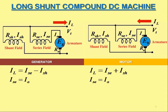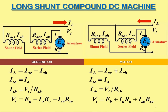The series field current ISC would be identical to the armature current IA for both long shunt compound DC generator as well as long shunt compound DC motor. The shunt field current ISH can be calculated by dividing terminal voltage VT by shunt field resistance RSH for both long shunt compound DC generator as well as long shunt compound DC motor. In case of long shunt compound DC generator, the terminal voltage VT can be calculated by subtracting the armature voltage drop IA·RA together with the voltage drop in series field winding ISE·RSE from the generated EMF EG.